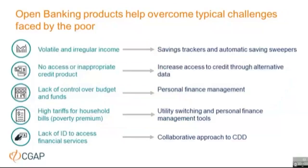In CGAP's review, we looked at the needs of poor people, particularly in emerging markets, and tried to map products that could help alleviate their pain points. There are five main types of issues. First, volatile and irregular income — open banking-enabled products can help individuals save and create a financial cushion to smooth out income, including saving trackers and automatic savings sweepers. These applications calculate what a customer can save and when, based on financial history and real-time data, then automatically transfer funds into a dedicated savings account. Examples include Moneybox in the UK and Neerkat in South Africa.